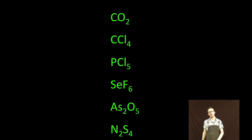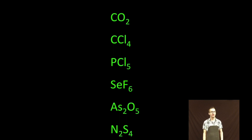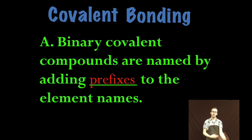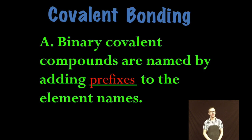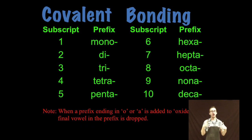As I take a look at my screen I've got some examples of binary covalent compounds. I know they're binary because there's only two elements involved, and I know they're covalent because in each example the elements involved are two non-metals. It's important to recognize that binary covalent compounds are named by adding prefixes to the element names, and those prefixes that you will have to memorize are on the screen in front of you and they're in your notes.